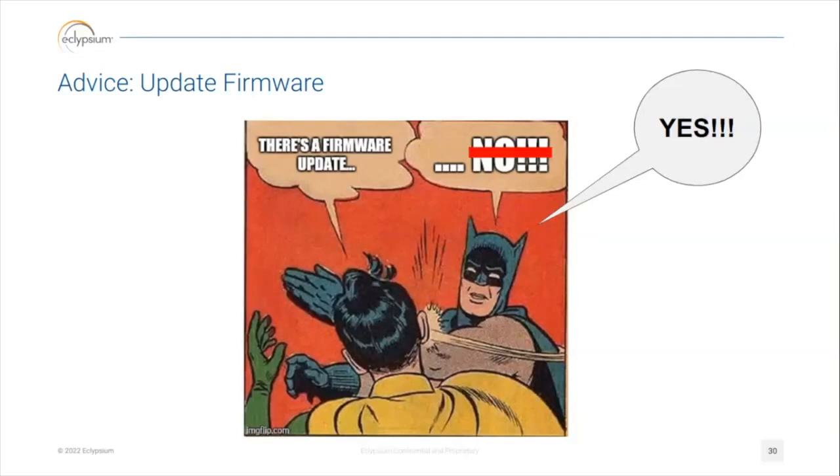My advice to deal with Intel ME issues: make sure you update your firmware — always update your UEFI first, because when you go update Intel ME it's often going to tell you to update your UEFI BIOS first. Then go see if you have ME on your system using the commands shown, find through your OEM the updated version of ME, and if you're running Linux you'll have to build a Windows bootable USB drive to apply the updates in most cases, since ME update software is typically written for Windows.